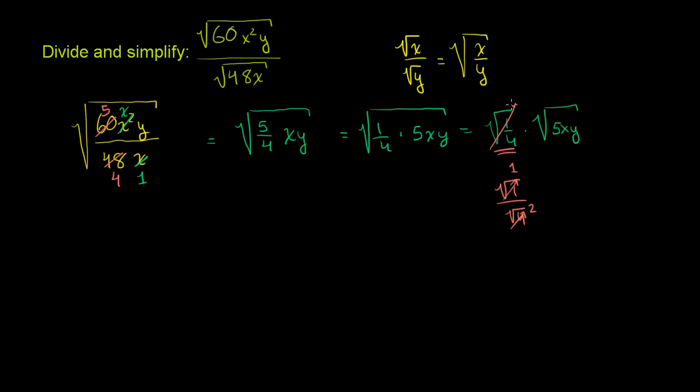And so if you simplify this right here to 1/2, then the whole thing can simplify to 1/2 times the principal root, I'll just write it all in orange, times the principal root of 5xy. And there's nothing else that you can really take out of the radical sign here. Nothing else here is a perfect square.